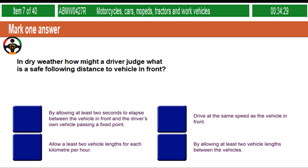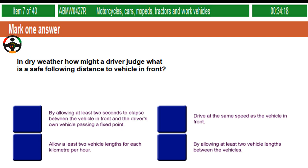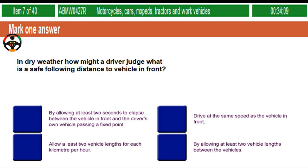In dry weather, how might a driver judge what is a safe following distance to the vehicle in front? By allowing at least two seconds to elapse between the vehicle in front and the driver's own vehicle passing a fixed point. Allow at least two vehicle lengths for each kilometre per hour. By allowing at least two vehicle lengths between the vehicles.